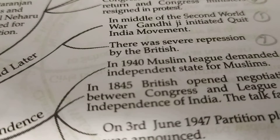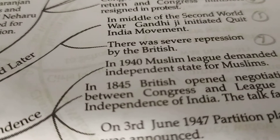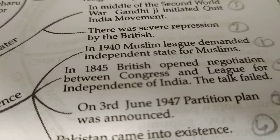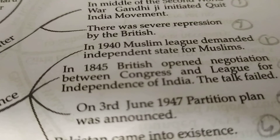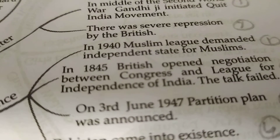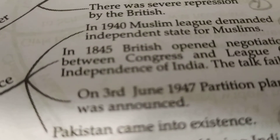In 1944, the Muslim League demanded an independent state for Muslims. In 1945, the British opened negotiations between Congress and the League for the independence of India. Then, on 3rd June 1947, the Partition Plan was announced by Lord Mountbatten. Pakistan came into existence on 14th August 1947, and India and Pakistan were separated into two independent countries.